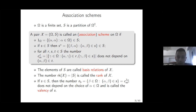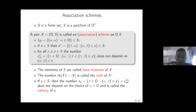A pair X consisting of omega and S is called an association scheme, or briefly just the scheme on omega, if the following three conditions are satisfied: the diagonal of omega square belongs to our partition; if some binary relation s belongs to our partition then the relation inverse to s — denoted by s* — also belongs to our partition; and for all relations r, s, and t from our partition, the number of elements gamma from omega such that the pair (alpha, gamma) belongs to r and the pair (gamma, beta) belongs to s does not depend on the choice of the pair (alpha, beta) from t.